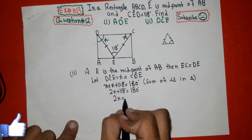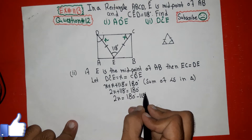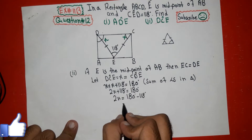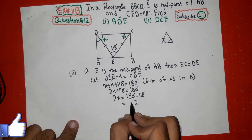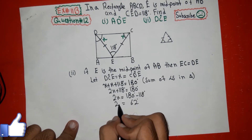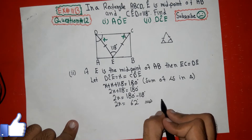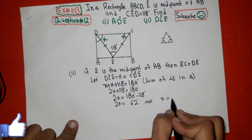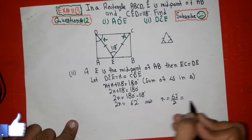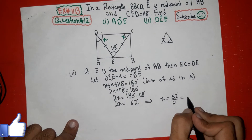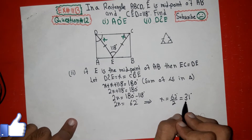So 2X equals 180 minus 118, which gives 2X equals 62 degrees. Dividing both sides by 2, X equals 31 degrees. So the value of angle DCE equals 31 degrees.